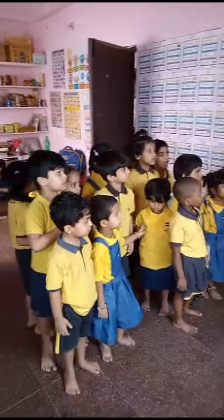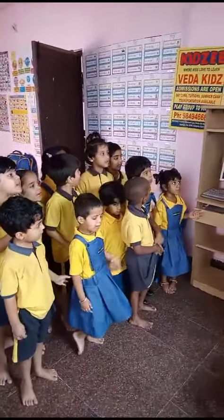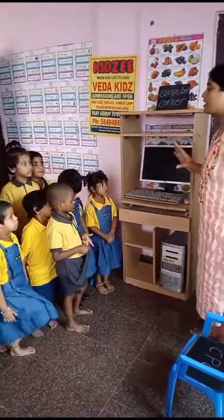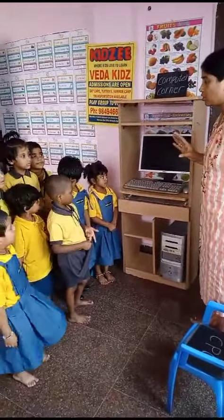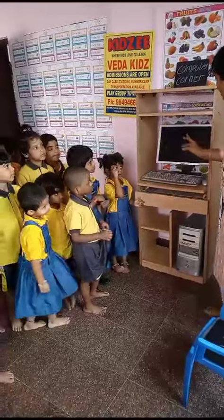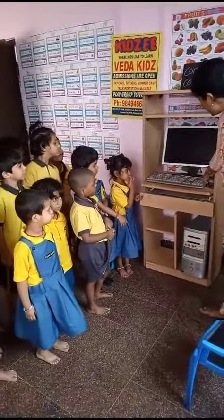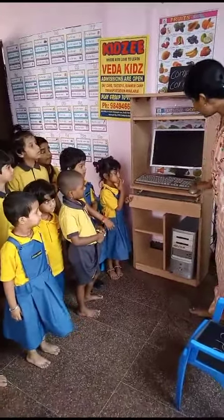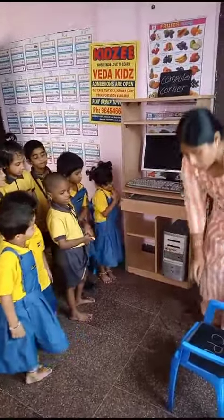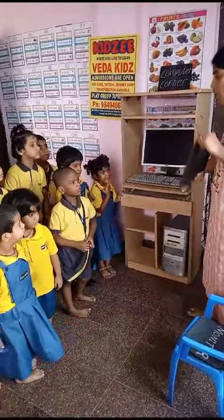Parts of a computer. There are four main parts of a computer. Okay, this one, this one, this one, and this one. So, this one is what?